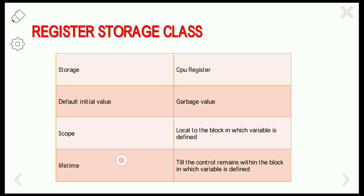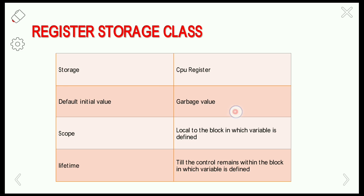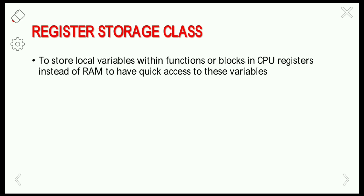The properties are: storage, default initial value, scope, and lifetime. The computer stores data in two types of storage: registers or memory. The default initial value is the garbage value, since we are not giving any initial value, so the compiler will take an unpredictable garbage value. The scope of the variable is local to the block where the variable is defined, and the lifetime is until control remains within that block.